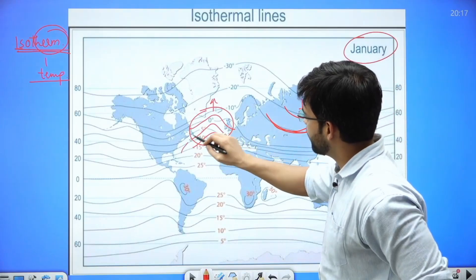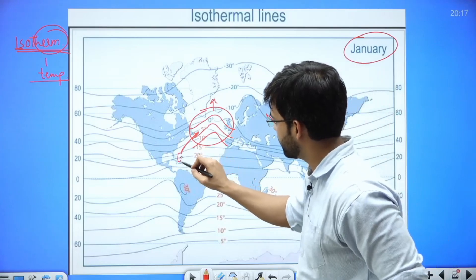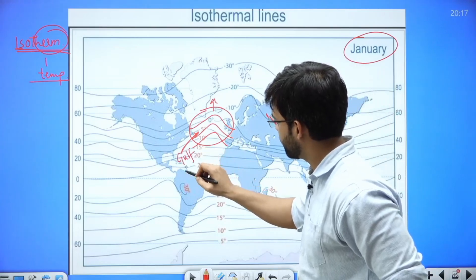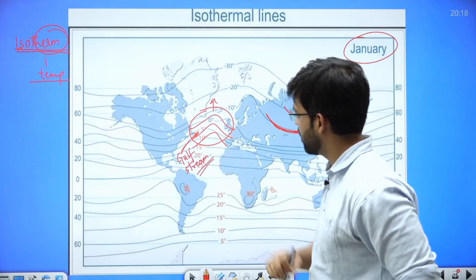The Gulf Stream that is entering into the North Atlantic Ocean—here, somewhere here—there is Gulf Stream as well as North Atlantic Drift that is warm.